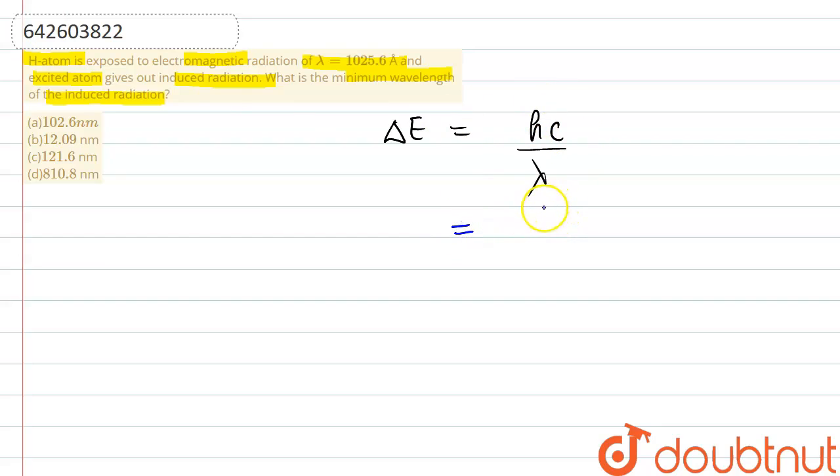We know the value if we talk about electron volt nanometer. The value for hc is 1240 electron volt nanometers. And then the wavelength we have to take in denominator, which is already given in the question, 1025.